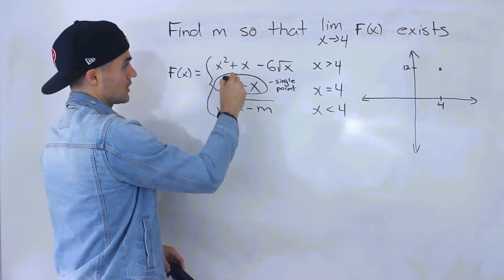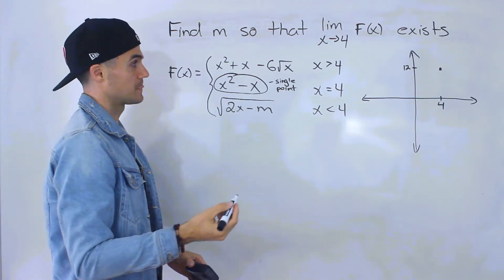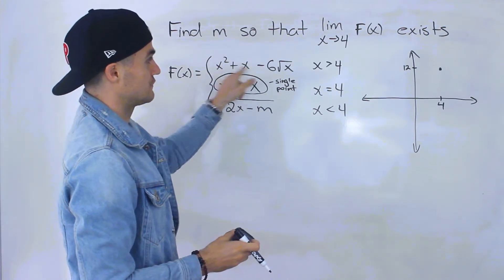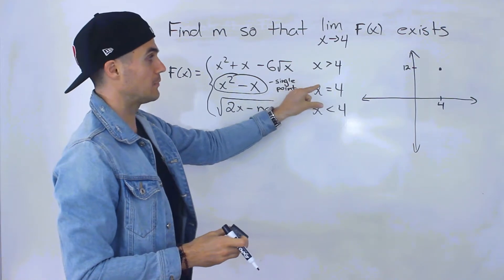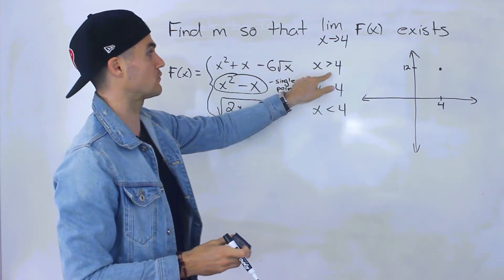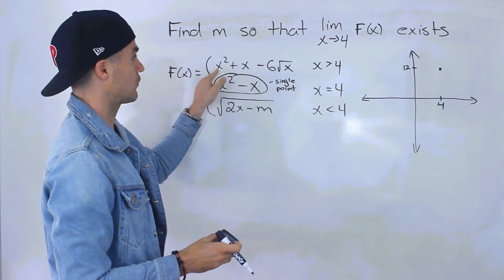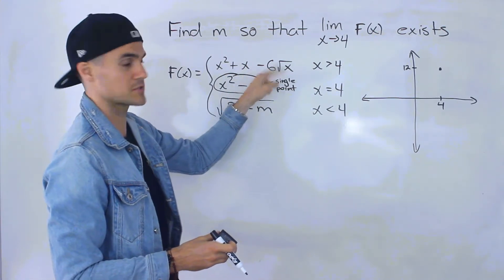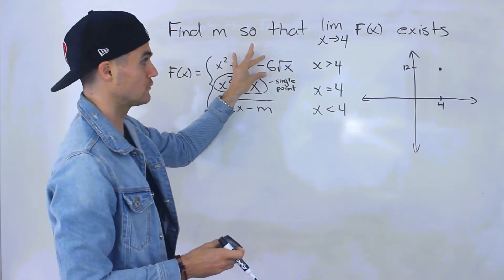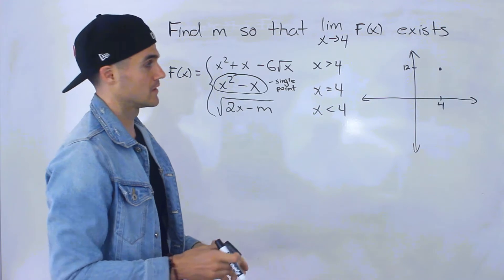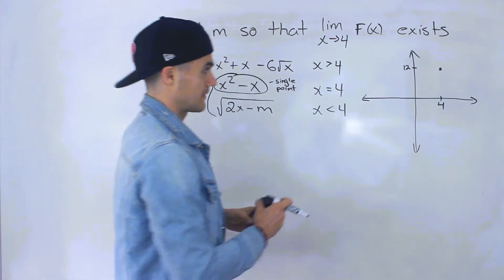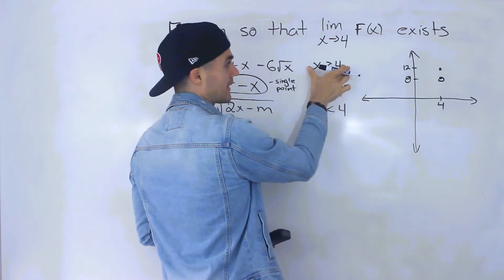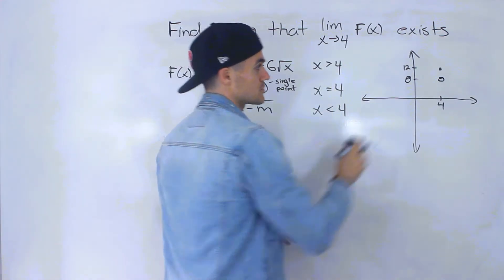Now what about the function x squared plus x minus 6 root x? That function is defined when x is greater than 4. Let's see what's happening at x equals 4: plugging in gives us 4 squared plus 4, which is 20, minus 6 times the square root of 4, which is minus 12. So 20 minus 12 equals 8. This function at x equals 4 starts at a y value of 8 — but there's a hole there, because it's only defined for x greater than 4.